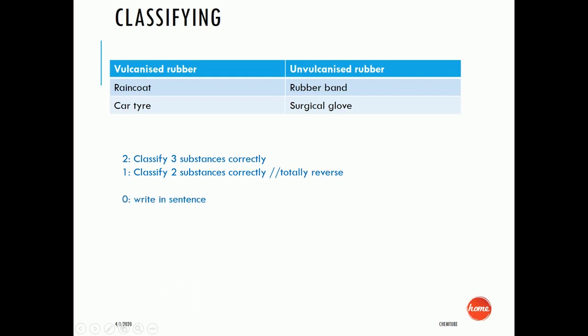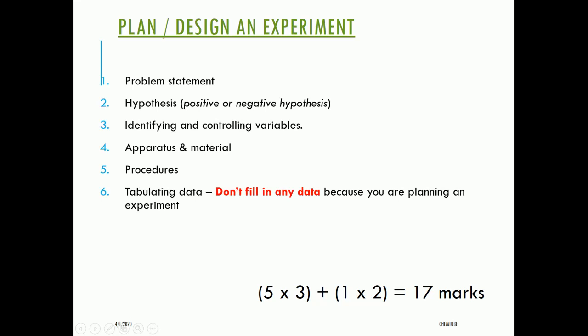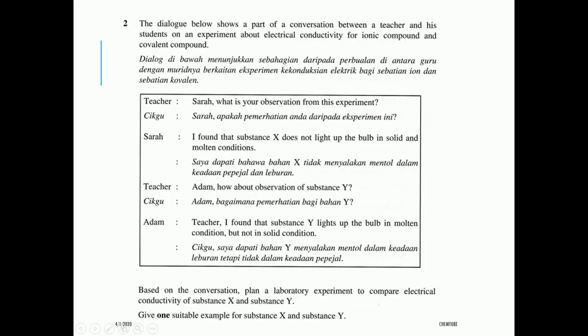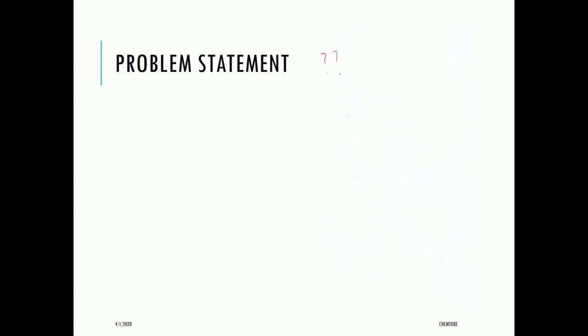The second part of the paper is the planning and design of an experiment. Questions 1 to 5 are worth 3 marks each, and tabulation of data is worth 2 marks, for a total of 17 marks. There is a dialogue between a teacher and a student about the electrical conductivity of ionic compounds and covalent compounds. The task is to plan a laboratory experiment to compare the electrical conductivity of substance X and substance Y, and give one suitable example of each.